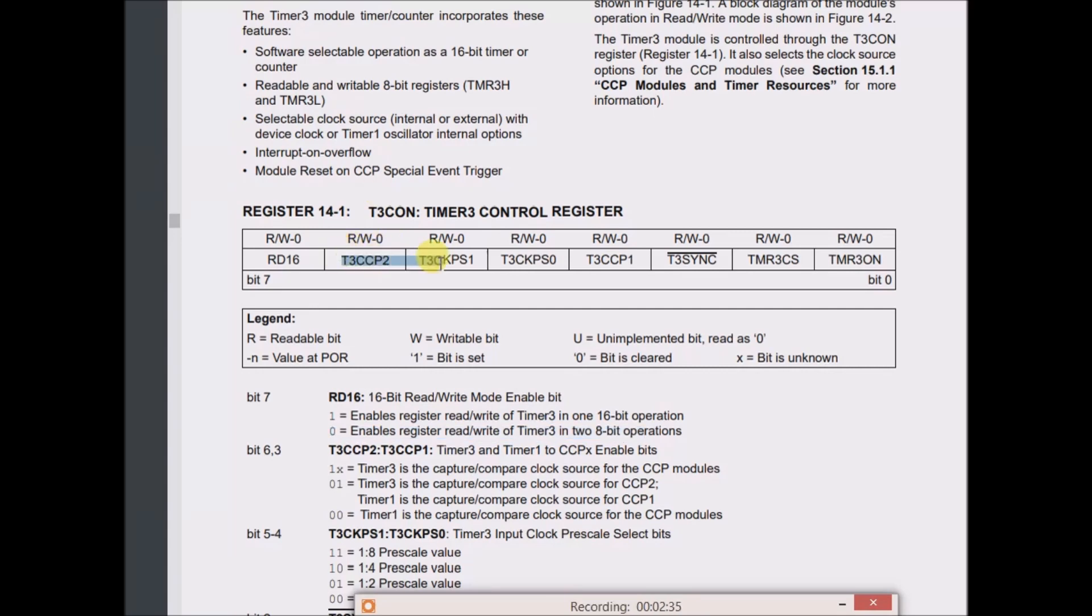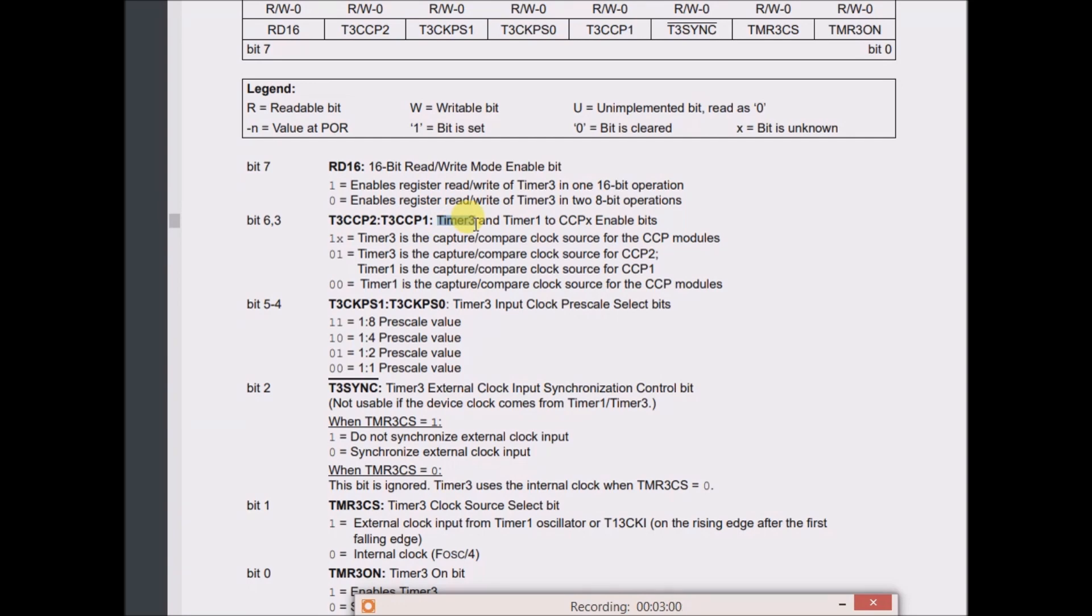It says that bit 6 down to bit 3, timer 3 and timer 1 to capture compare enable bits. So this is using the CCP, timer 3 and timer 1 to CCP enable bits. Timer 1 is capture compare clock source for CCP1.